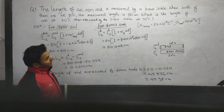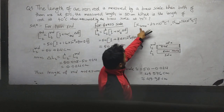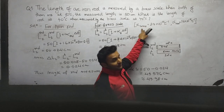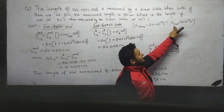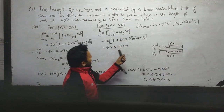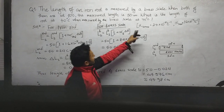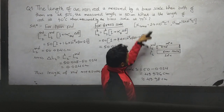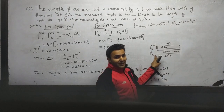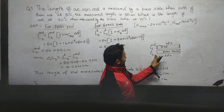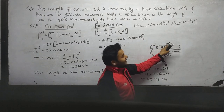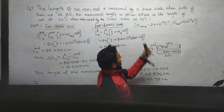For such a problem, we must have the value of alpha — that is, the linear expansivity of brass and the linear expansivity of the iron rod. The initial length of the rod is L1, and the initial length of the brass scale is L1_brass — both at 10 degrees centigrade, equal to 50 cm.